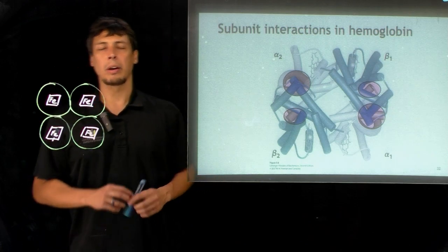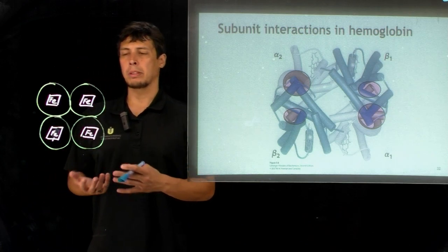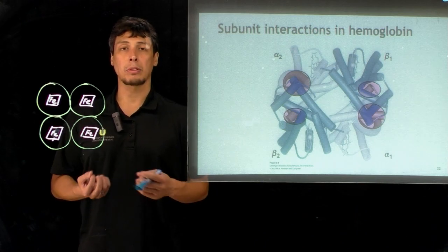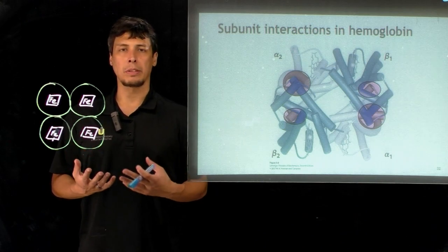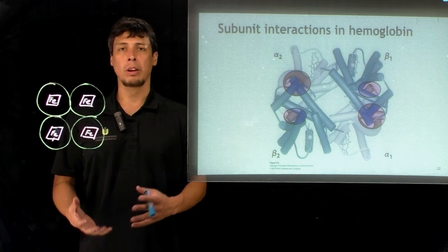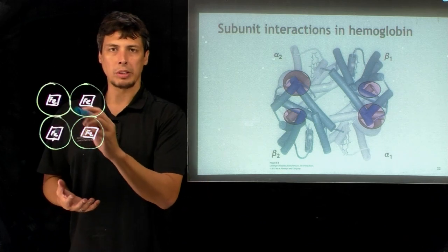Up to this point we've been talking about how there has to be some sort of cooperativity, and for there to be cooperativity in hemoglobin there has to be some way for the subunits to communicate with each other.